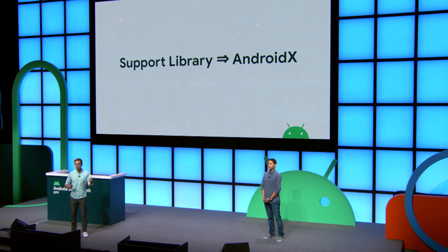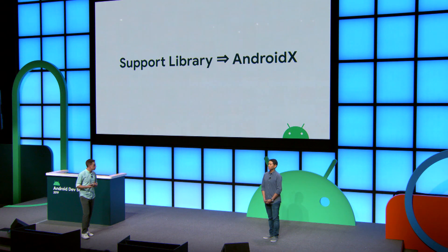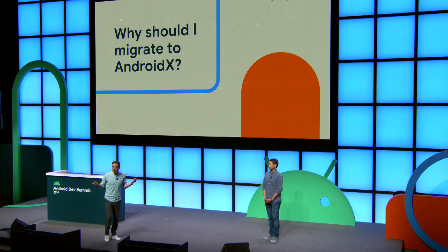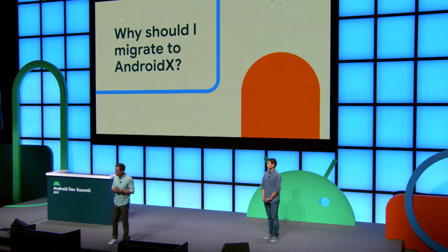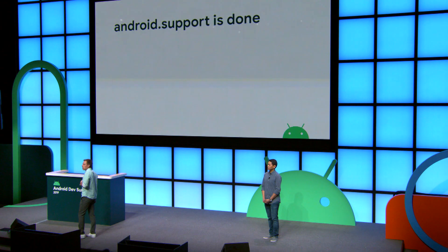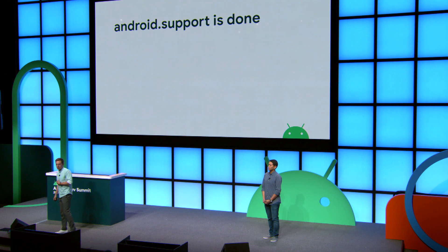Now the question we want to ask ourselves is: why should I migrate? There are four points we want to bring up. One is that the Support Library is done. 28.0 was the last release of the android.support namespace. This is a namespace we're no longer maintaining.